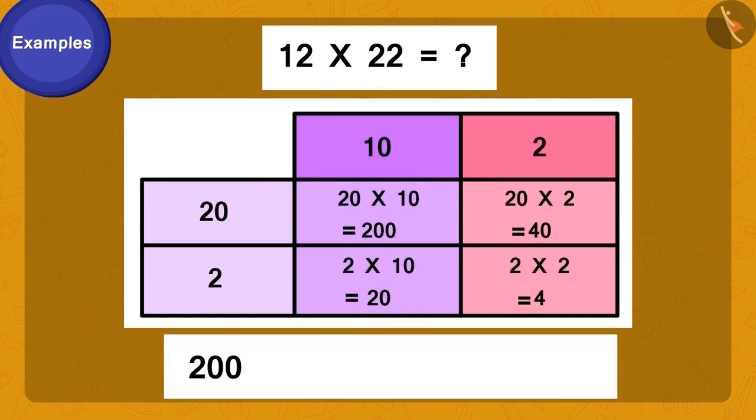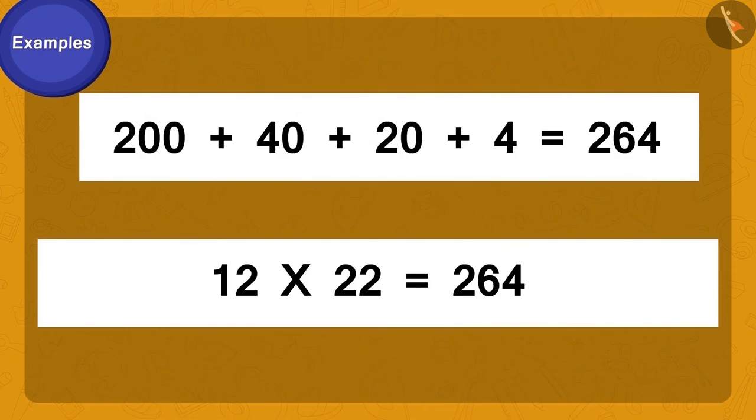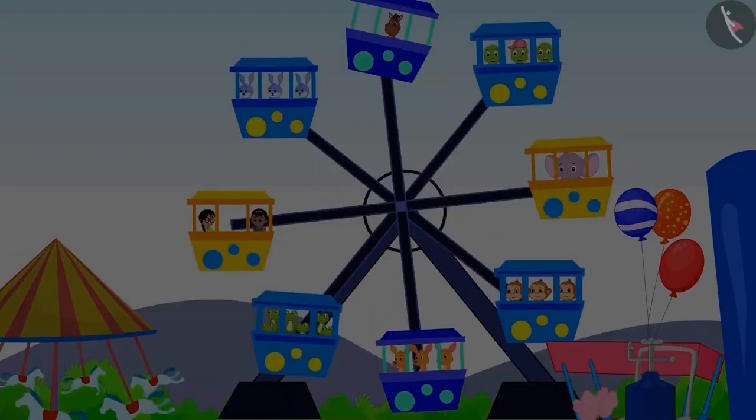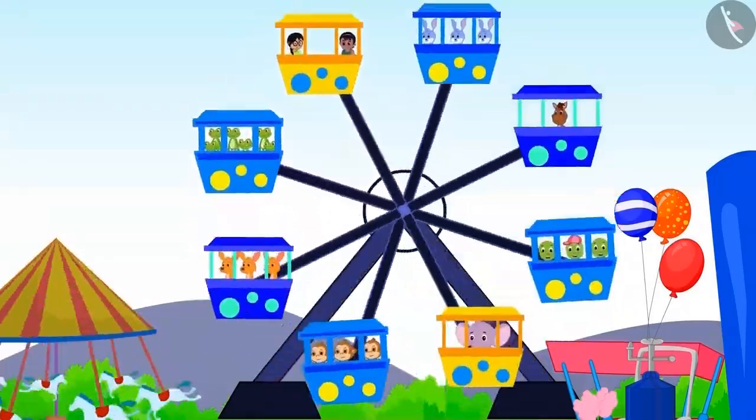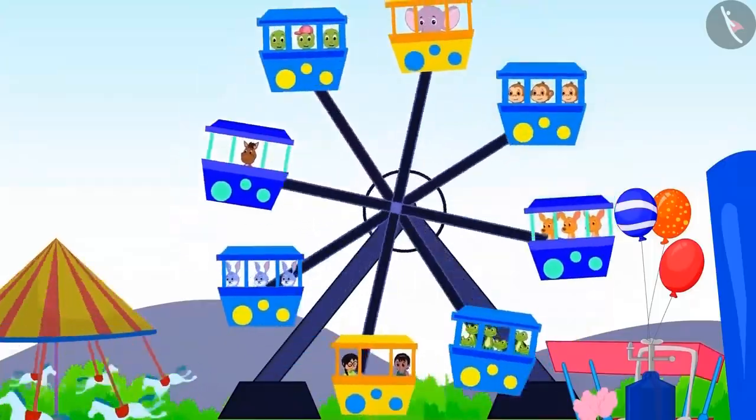Adding two hundred, forty, twenty, and four is our answer: two hundred sixty-four. Following this method, we got twelve times twenty-two is two hundred sixty-four. A total of two hundred and sixty-four people can sit in the Ferris wheel in a day.